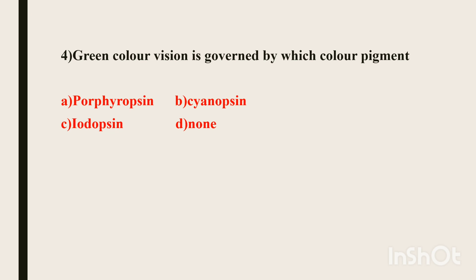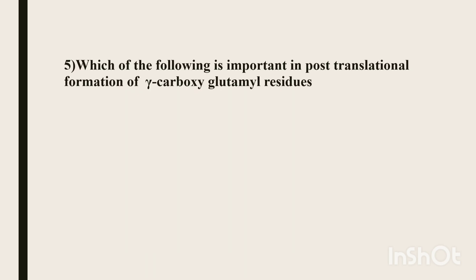For green color vision, the pigment is iodopsin. Regarding a related question on clotting, vitamin K is the one that assists with clotting.